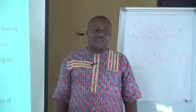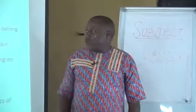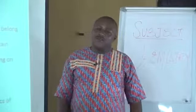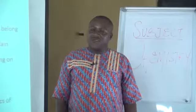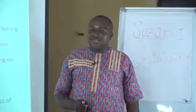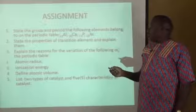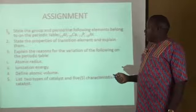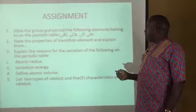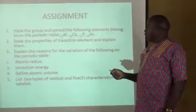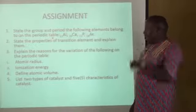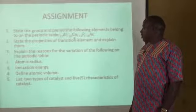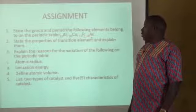Hi, my wonderful students at home. My name is Mr. Williams Ishaokou. I believe you have learned a lot from this presentation beautifully presented by Mr. Philip Mamman and Mr. Ibrahim Umar. I am here to read out this assignment for you so that you can try them at home. Question number one: state the group and period the following elements belong to on the periodic table — aluminium with atomic number 13, calcium with atomic number 20, phosphorus with atomic number 15, and argon with atomic number 18.